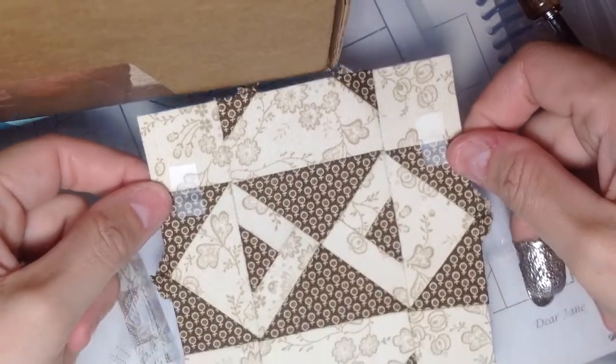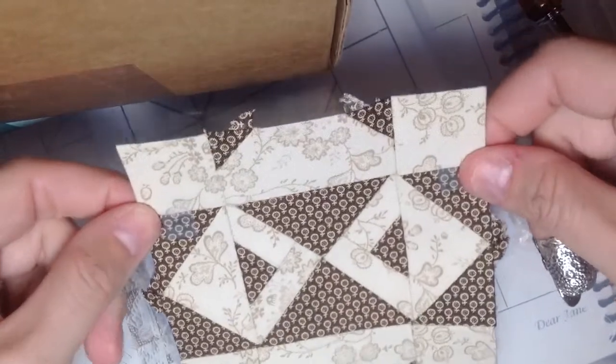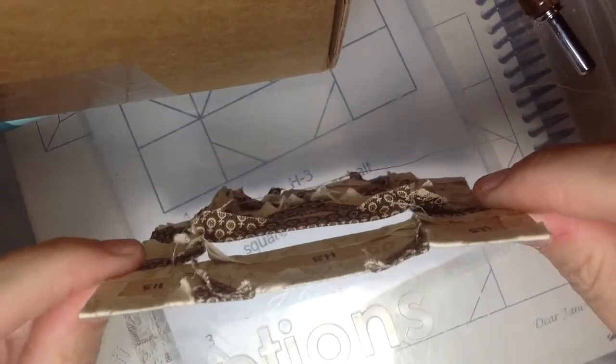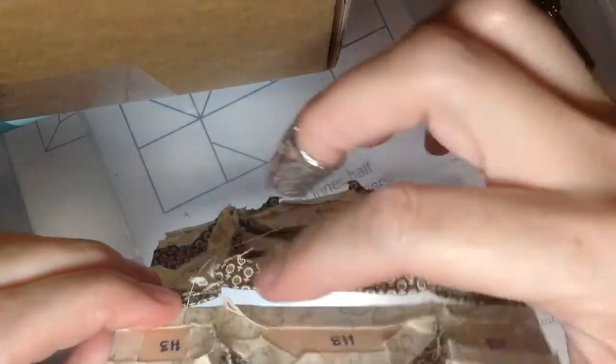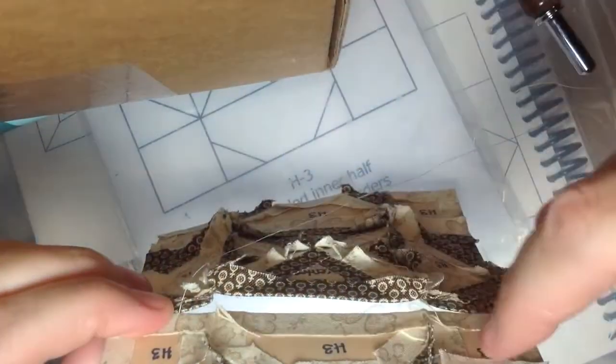Okay, so I'm trying to attach my last row to my block, and I don't know if you can see this, but this part is bowed up compared to this part.